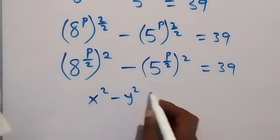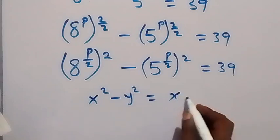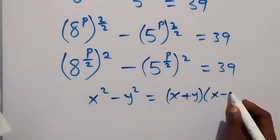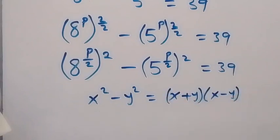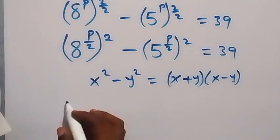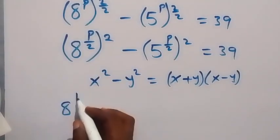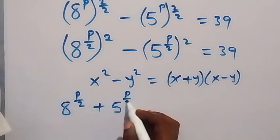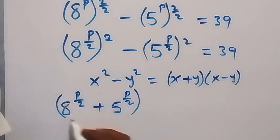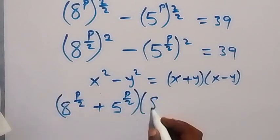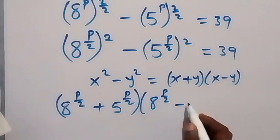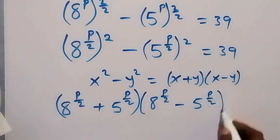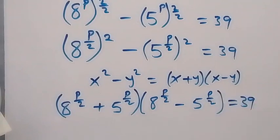Since x squared minus y squared equals (x + y)(x − y), we write this as: 8 raised to power p over 2 plus 5 raised to power p over 2, multiplied by 8 raised to power p over 2 minus 5 raised to power p over 2, equals 39.